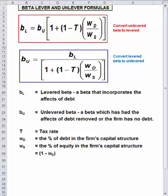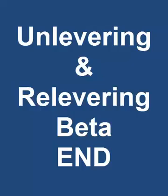Unlevering removes the debt effects. It decreases beta, so you divide. I hope walking through these examples and the uses of levering and unlevering equations will help you feel more comfortable about when to use them and how to use them.